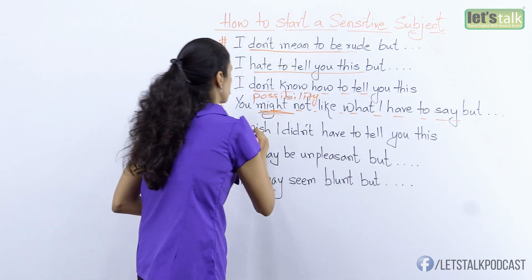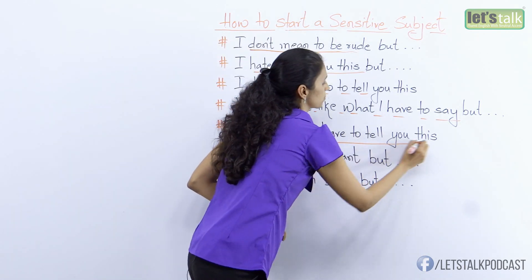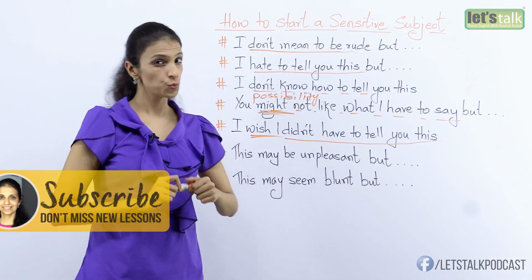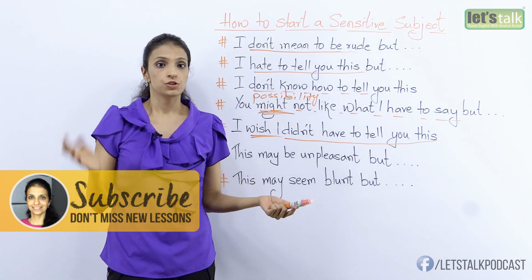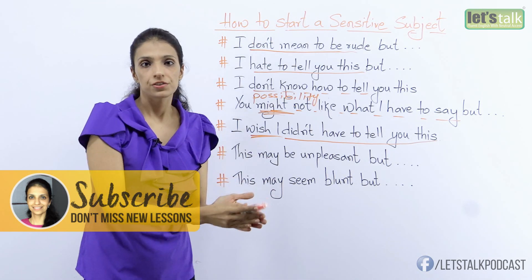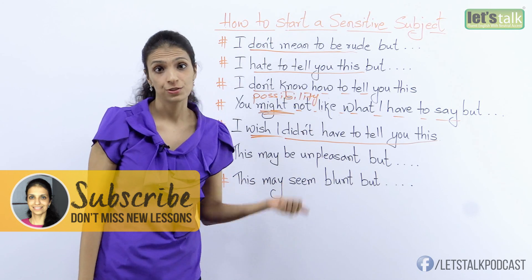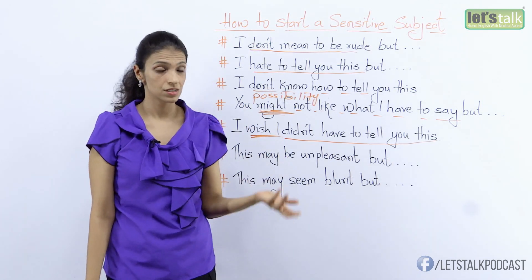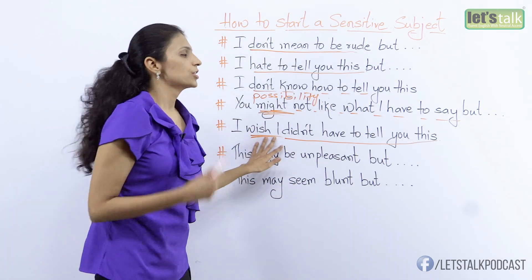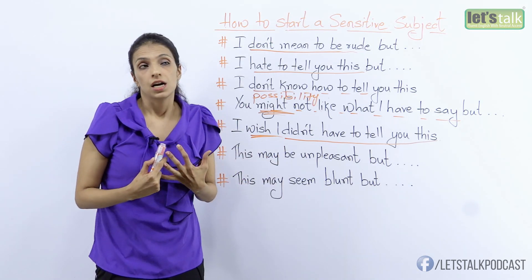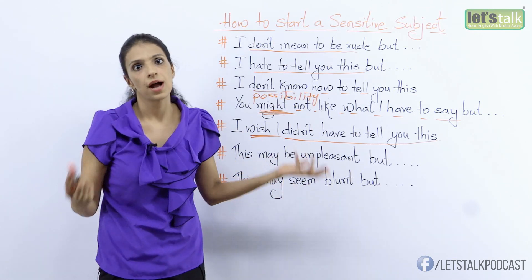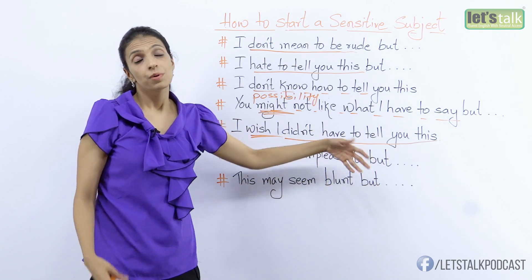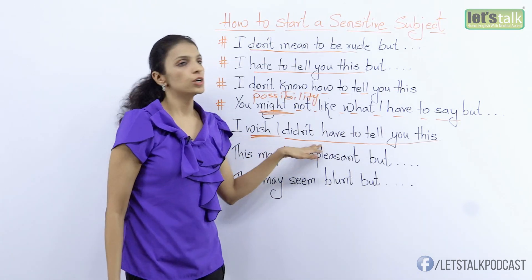The next one: 'I wish I didn't have to tell you this.' Imagine my friends and I are at a party and everyone feels Maria should know she's not too well dressed today. Nobody wants to go tell her, but finally I have to. I don't want to hurt her, but I want her to know. So I tell her: 'Maria, I wish I didn't have to tell you this, but your dress doesn't suit you.' When you say 'I wish,' it's something you wish wouldn't happen, but it's going to happen — you are going to tell her.